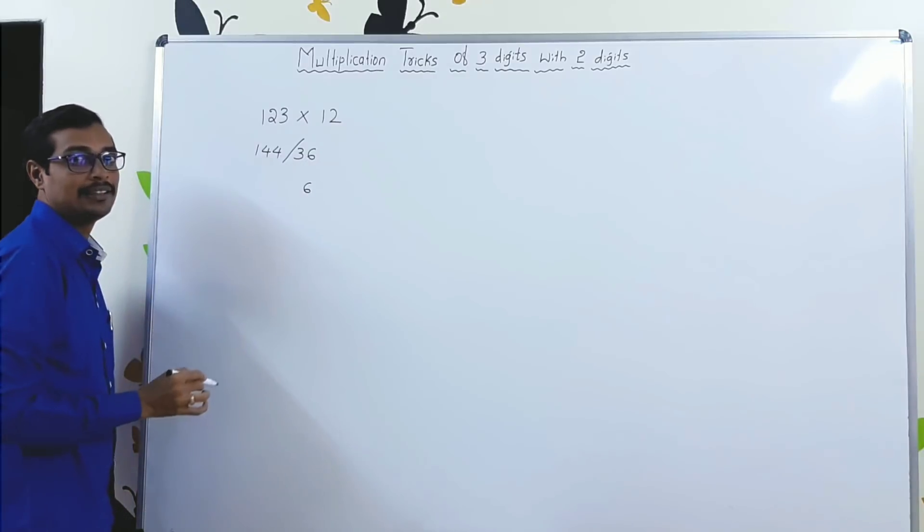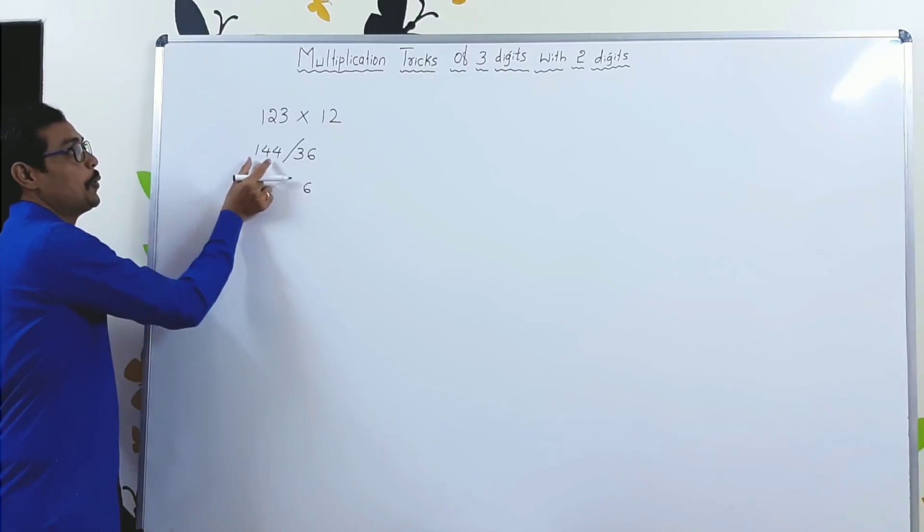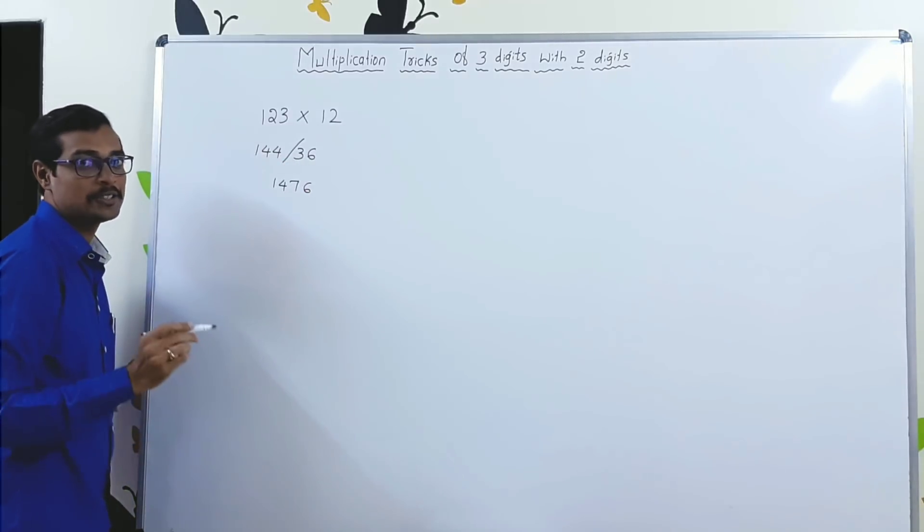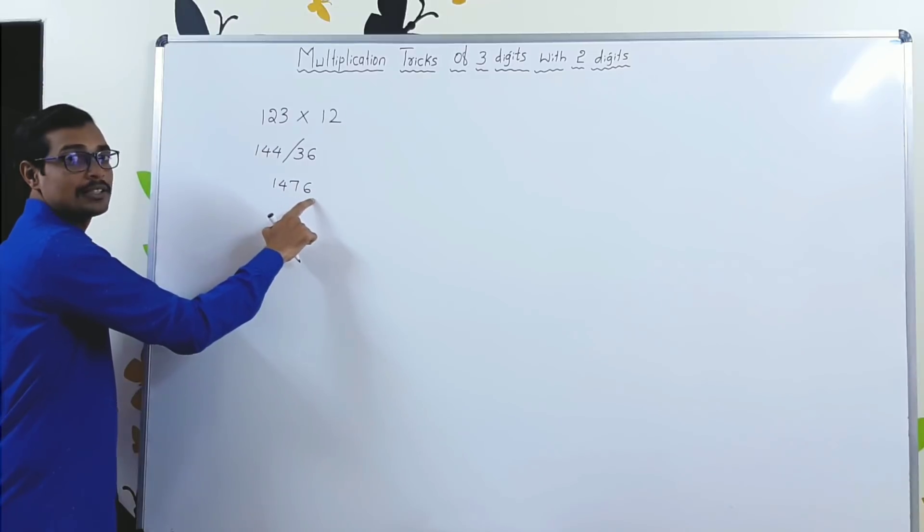Simply write the unit digit 6. 144 plus 3 is 147. So, your answer, 1476.